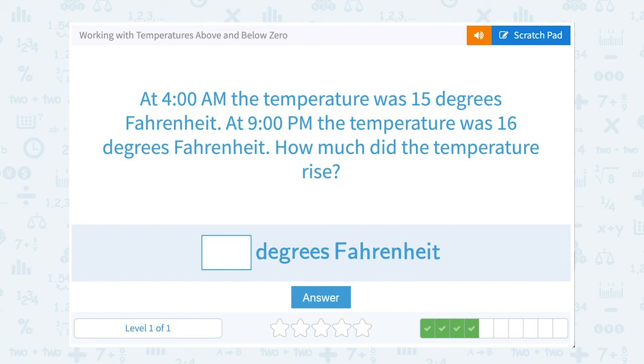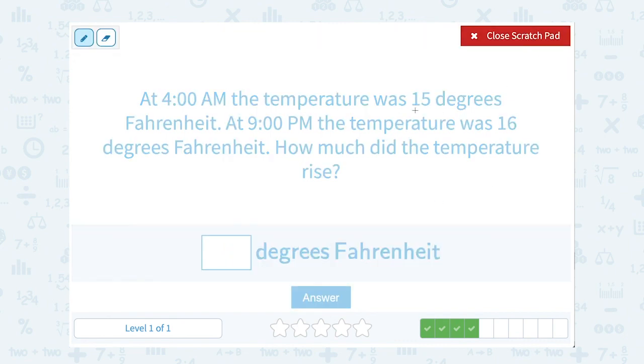At 4 a.m., the temperature was 15 degrees Fahrenheit. At 9 p.m., the temperature was 16 degrees Fahrenheit. How much did the temperature rise? How much did it rise if it started at 15 degrees and it wound up at 16 degrees? To figure out how much it rose or the difference, we can subtract. It wound up at 16 degrees minus the 15 degrees it started at means it rose or went up by one degree Fahrenheit.